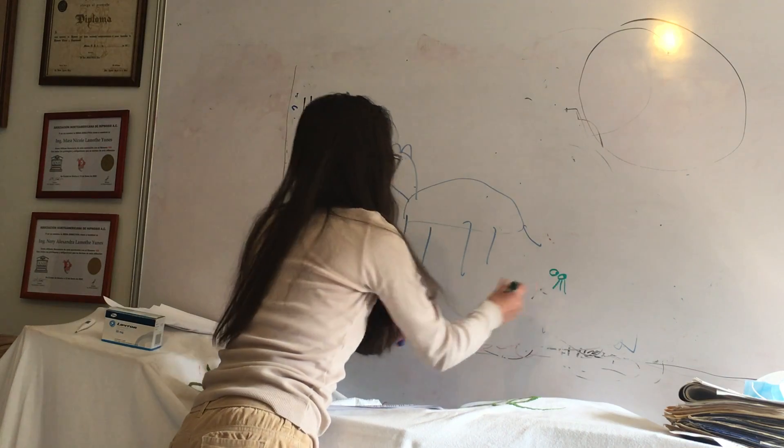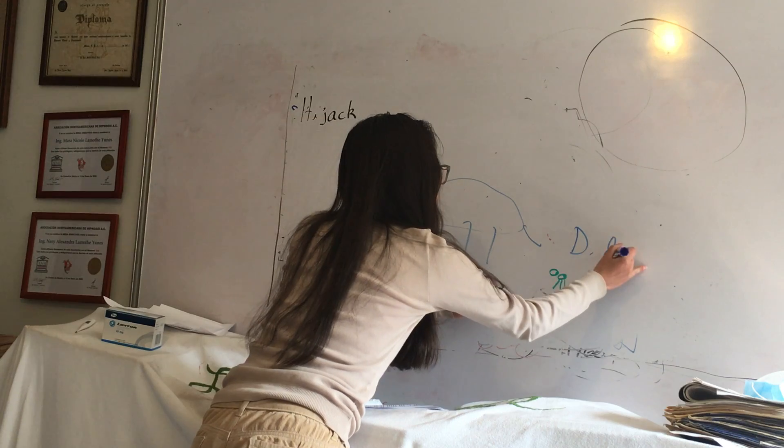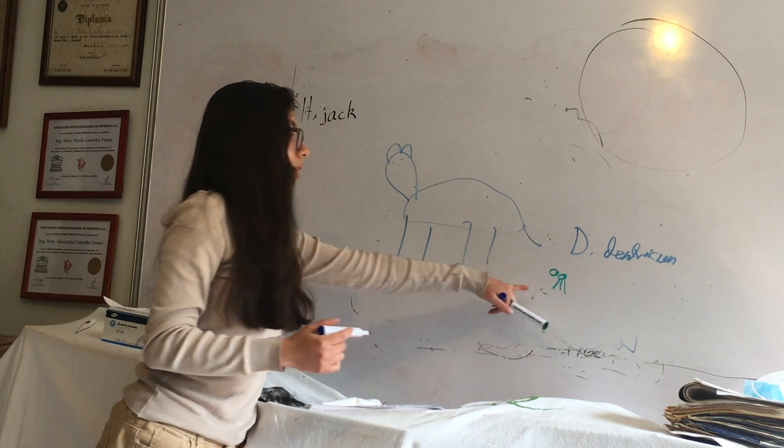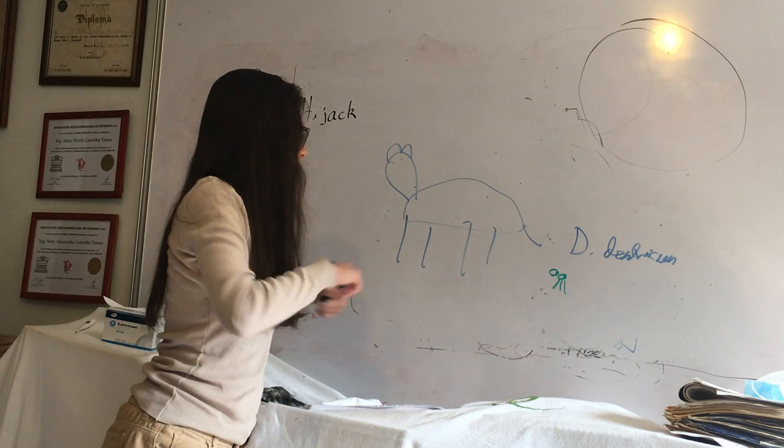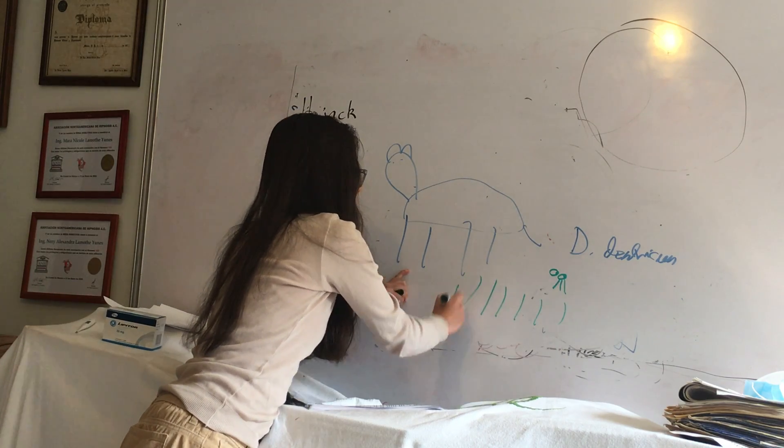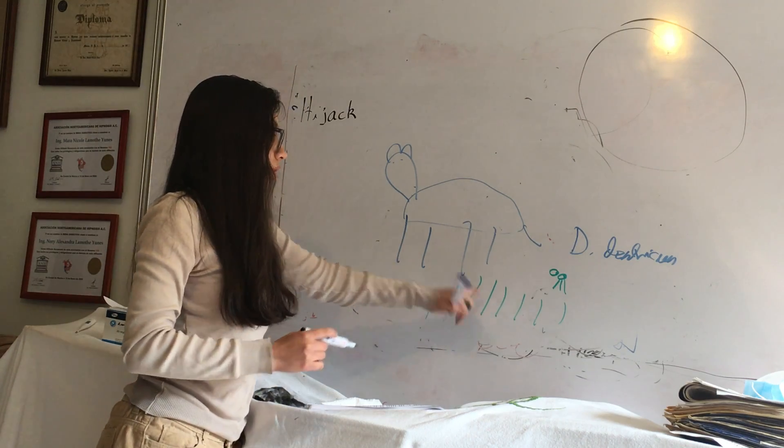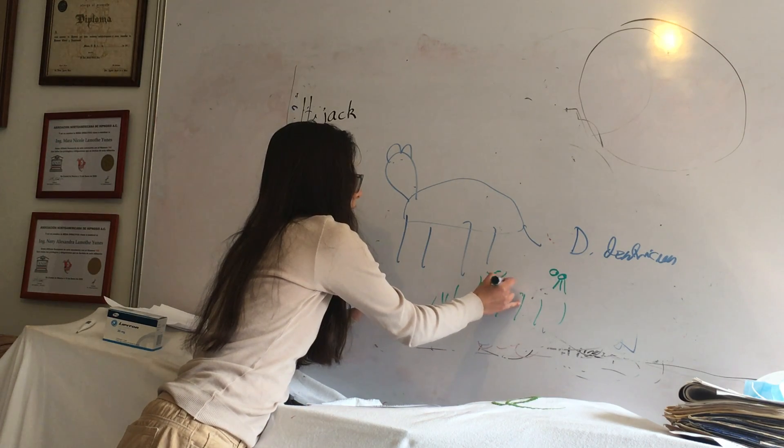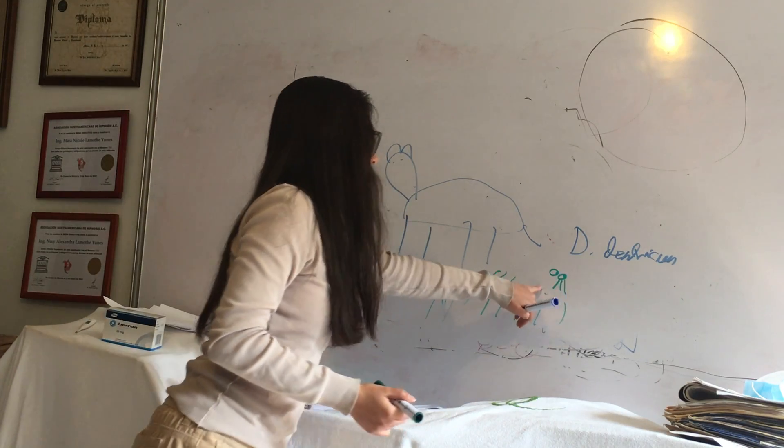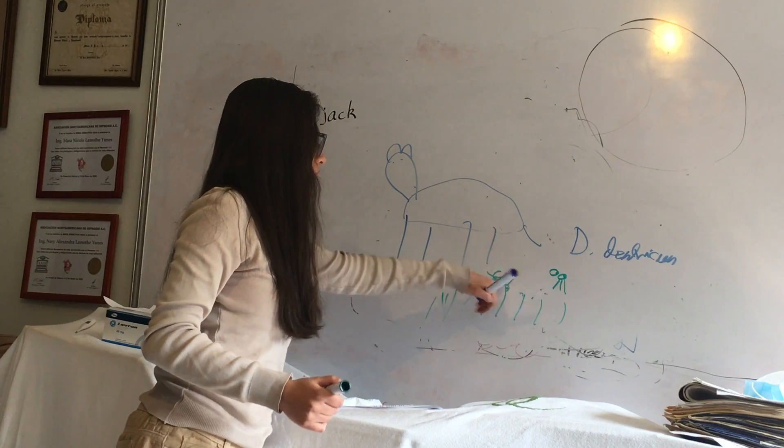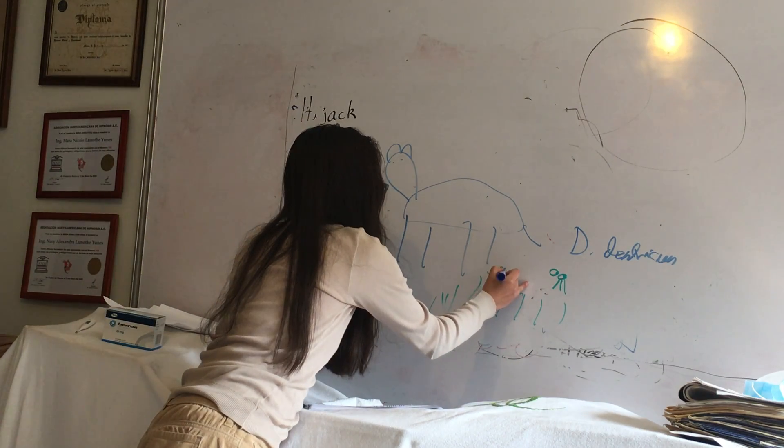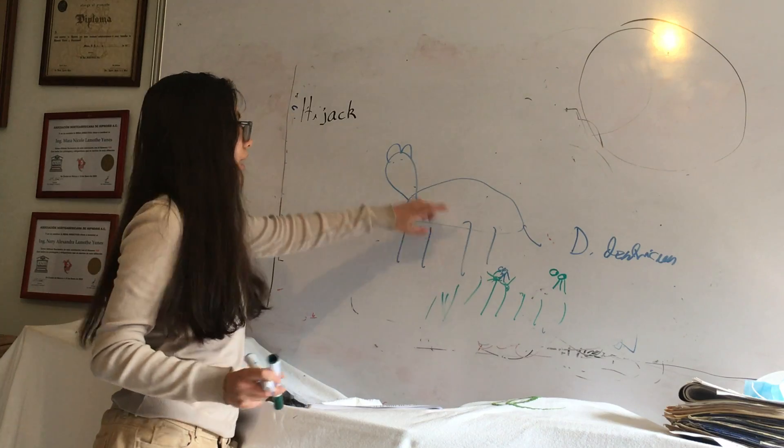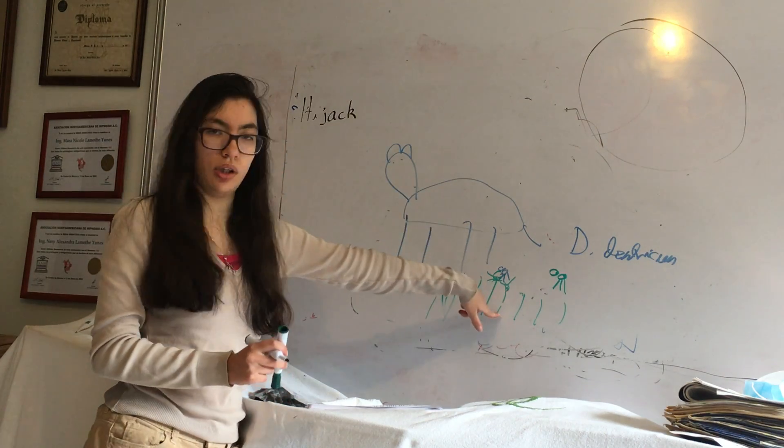There is a parasite called Dicrocoelium dendriticum. And what the dendriticum does when it infects the ant is the ant is going to go to some flowers and get up here at the top of the flowers. Let me put some flowers here. When the dendriticum infects the ant, the ant is going to go up here at the top of the flower. So this is the ant, which now is infected. If it is here on top of the flower, it is very easy that the cow sees the ant, and so the cow is going to eat the ant.